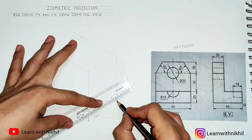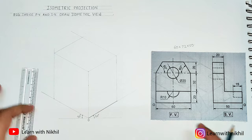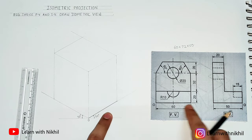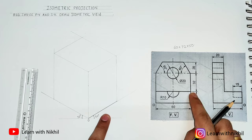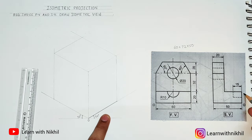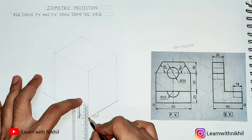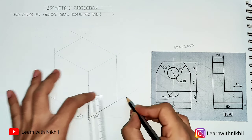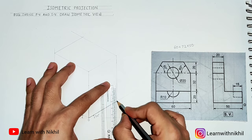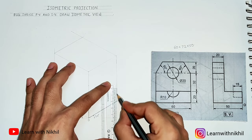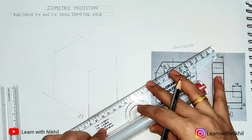The front view width is 60, so I'll draw a dark line of that length. This length I've taken as 50 — we'll change that later. This height is 20, so I'll mark it dark. And also on this side it is 20. Now we'll join this line.